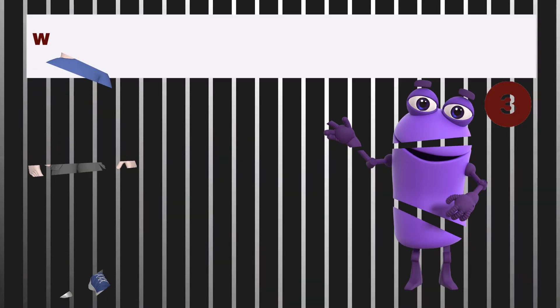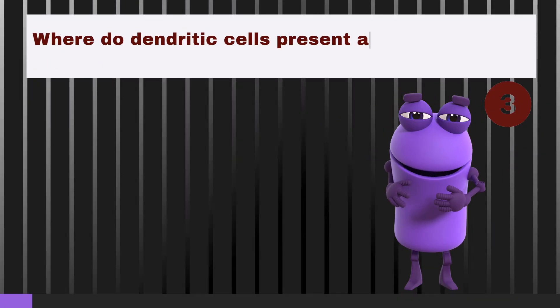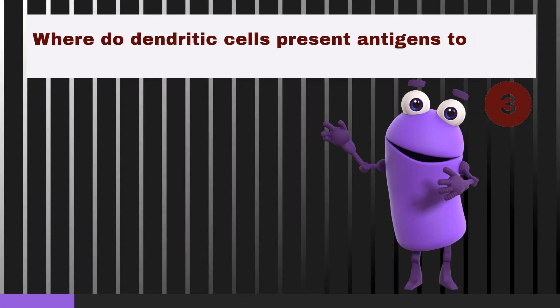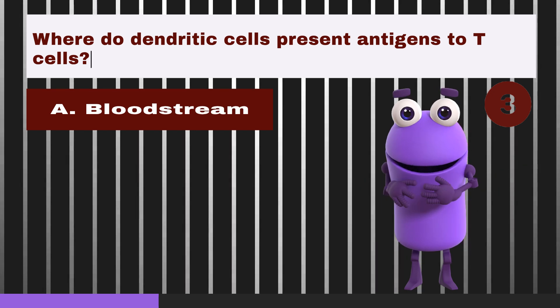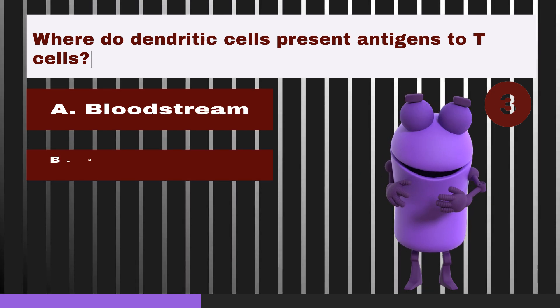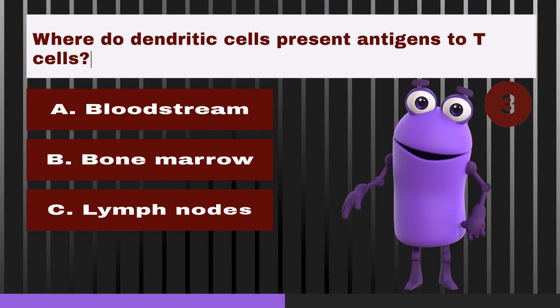Where do dendritic cells present antigens to T cells? A. Bloodstream. B. Bone marrow. C. Lymph nodes. D. Thymus.